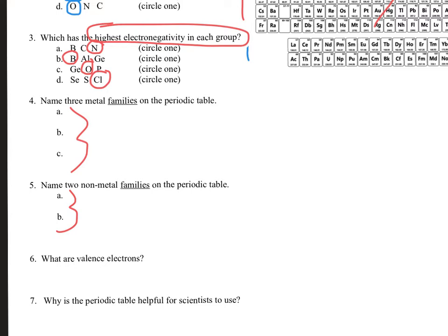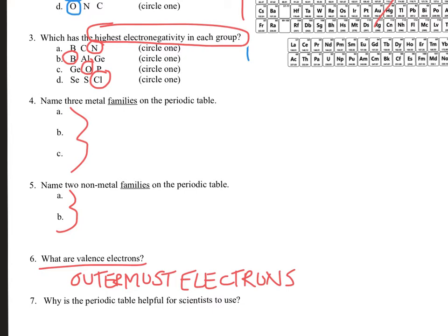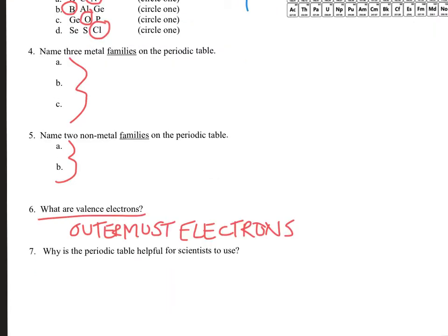Valence electrons are the outermost electrons in an element. We care about them because those are the ones involved with the outside world and bonding — valence electrons give the atom its chemical properties. The periodic table is helpful for scientists because it's full of trends: atomic radius, electronegativity, ionization energy, where metals and non-metals are, valence electrons, and charge — like group one is always plus one, group 13 is always plus three. These trends allow us to compare different elements.